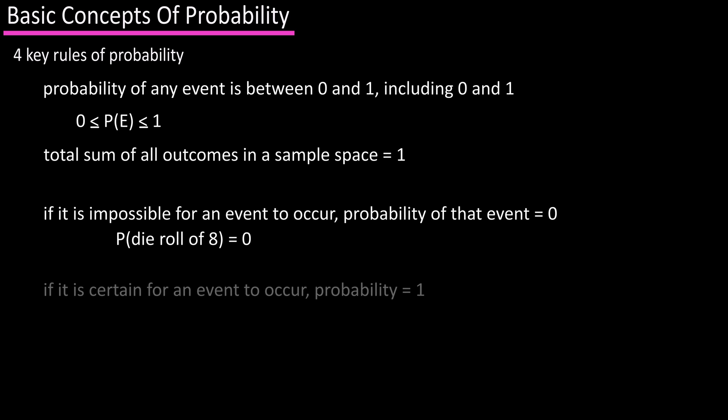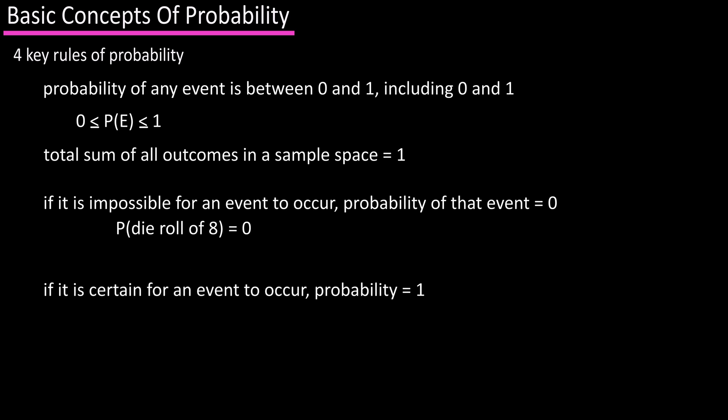Rule number four is that if an event is certain to occur, its probability is 1. So the probability of rolling a 1 through a 6 on a die roll is certain to happen, so its probability is 1.